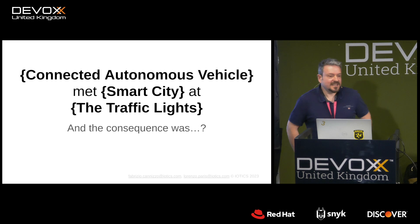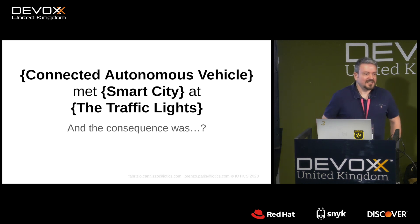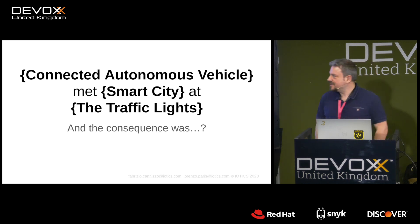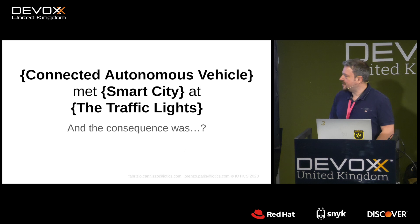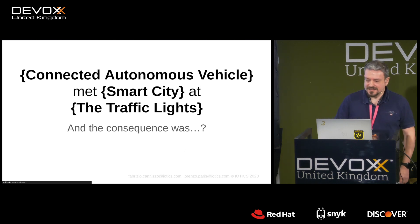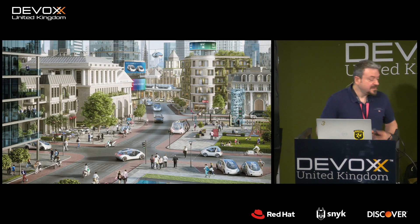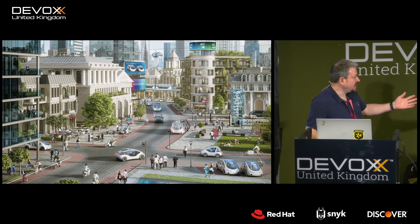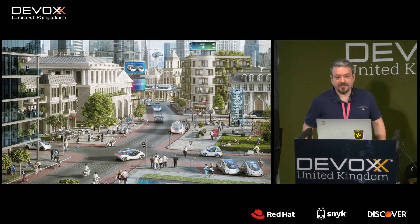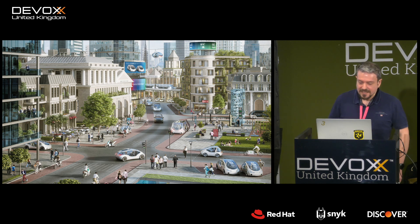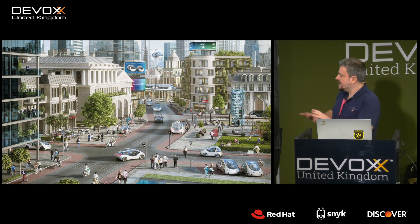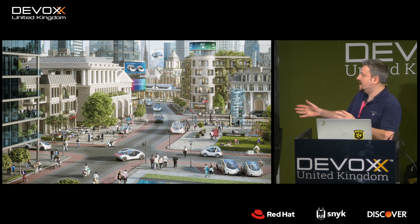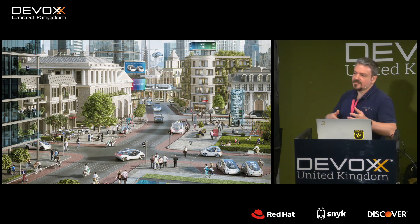Good morning and thank you for coming to our session on connected autonomous vehicles and smart cities. My name is Fabrizio, I work for IOTX. I want you to picture a city where cars — autonomous or more traditional — interact with traffic lights, zebra crossings, and road signs.